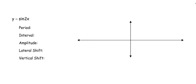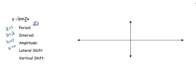Looking at our given information: our a value is 1, our b value is 2, there's no h, and there's no k. So your period is going to change this time. We've got 2π divided by 2, which means the length of one cycle is going to be π. Then we take that period and divide it into four equal pieces, so each tick mark is going to go up by one-fourth π.